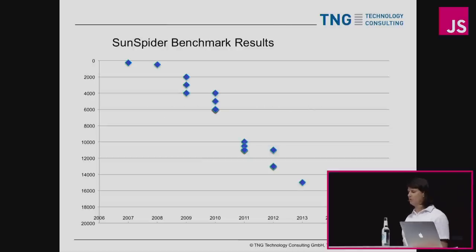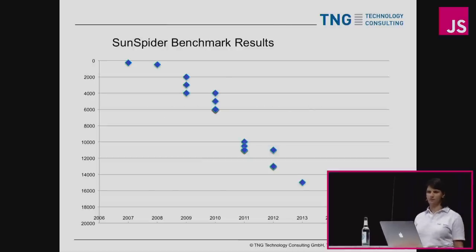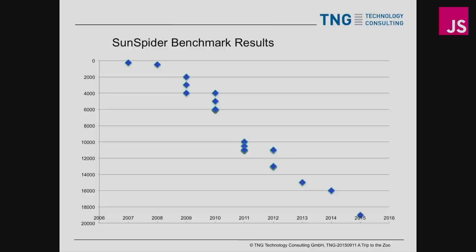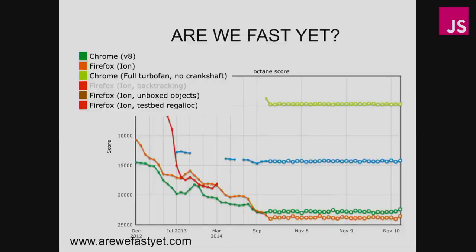Here are some benchmarks over the last ten years for different browsers on the SunSpider benchmark. As you can see, the score got higher because we got faster and faster. There's also a website arewefastyet.com, and you see a similar picture — another benchmark over the last two years with different versions of Chrome and Firefox showing massive performance improvements.